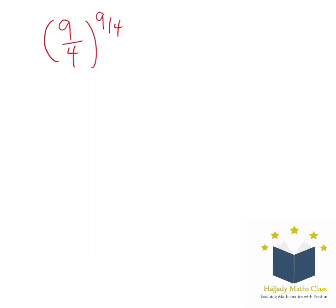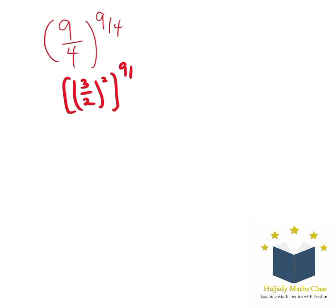Welcome to the other math class. We want to solve this question that we have here. Rewriting this question, this is the same thing as saying we have 3 over 2 squared, all to the power of 9 over 4.